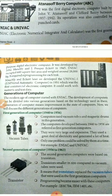Second generation of computer: 1956 to 1963. In second generation computers, vacuum tubes were replaced by transistors. Transistors were much smaller in size, and these computers were also easier to use. Examples include IBM 704 and IBM 1401.